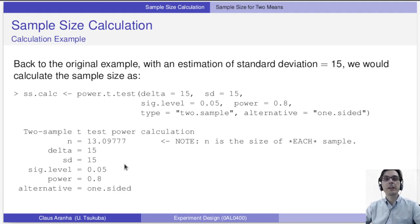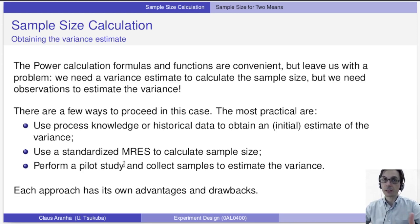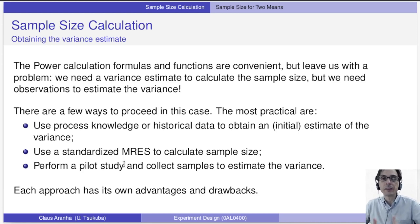That's one of the benefits of calculating the precise sample size. However, the power calculation formulas leave us with a problem: we need the variance to calculate the sample size, but we need to do an experiment to estimate the variance. So how do we obtain the variance without having an experiment in the first place?